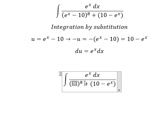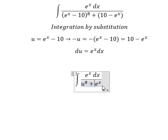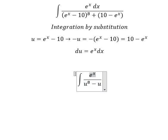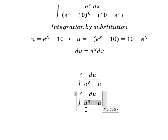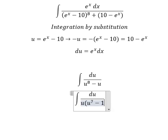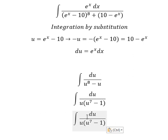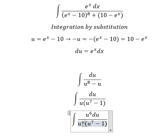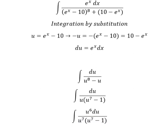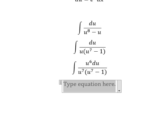Next we need to do the first derivative for both sides. We change this for u, this one for negative u, and this one for du. Now we can do factorization by u. Next we need to multiply by u to the power of six on the numerator and denominator. Now we can use interpretation by substitution.